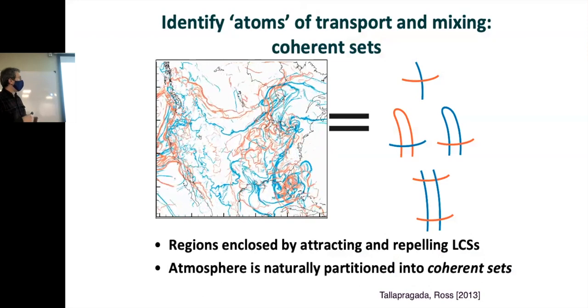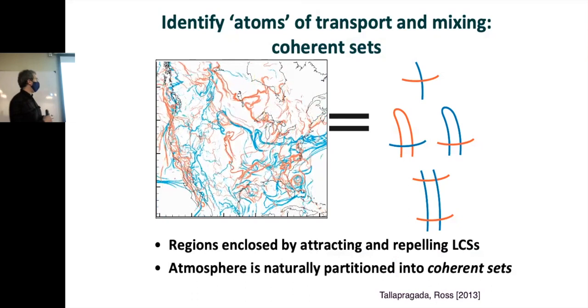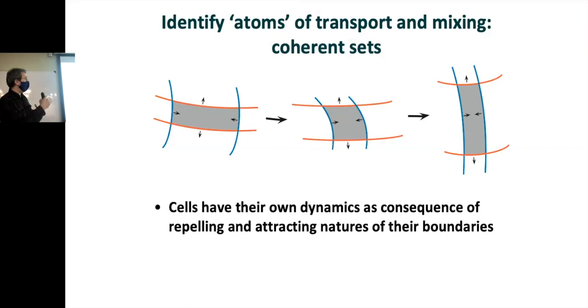We can do some things with this. We can identify atoms of transport and mixing. And this was important for some work where we were looking at how plant diseases travel across the U.S. If you could identify these regions that are bounded by attracting and repelling curves, well, they have dynamics of their own. Attracting curves are attracted to each other. Right here. Repelling curves are repelled from each other. So it means you've got everywhere in the flow, you've got, say, horizontal rectangles deforming into vertical rectangles, mixing and folding. And that's sort of the engine of chaos. You stretch, fold, re-inject. Stretch, fold, re-inject.